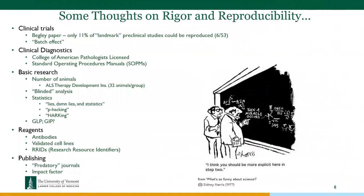Statistics have become a major issue with respect to p-hacking and HARKing. P-hacking means running the data every which way until you reach p=0.05, and then you stop and present that. HARKing is 'Hypothesizing After the Results are Known' — you look at all your data, find something significant, and go back and change the hypothesis.